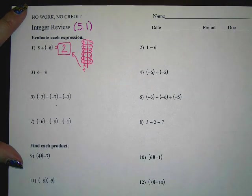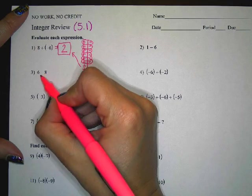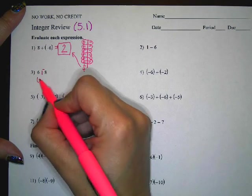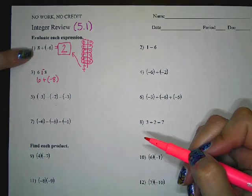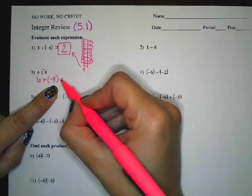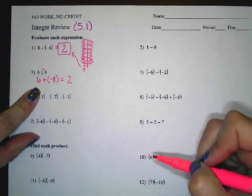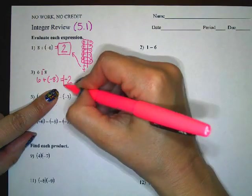On number three we have six minus eight. Remember that minus signs are the same thing as negative signs. We can rewrite this as six, and anytime you see a subtraction sign we're going to add the opposite. So this really becomes six plus a negative eight. We have six positives and eight negatives — signs are different, take the difference. Eight minus six is two, but this time we have more negatives than positives, so the answer is negative two.